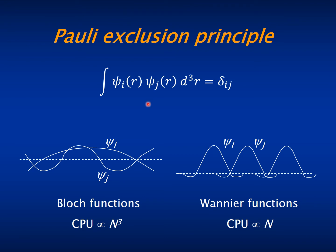Thus, simply to check that they are orthogonal, you have to perform an integral over all space, whose volume is proportional to the size of the system, so to the number of electrons.